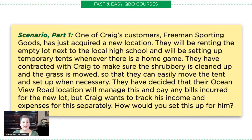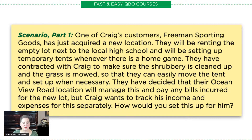Let's take a look at scenario Part 1. One of Craig's customers, Freeman Sporting Goods, has just acquired a new location. They will be renting the empty lot next to the local high school and setting up temporary tents whenever there is a home game. They have contracted with Craig to clean up the shrubbery and mow the grass. They've decided that their Ocean View Road location will manage this and pay any bills incurred for the new lot, but Craig wants to track his income and expenses for this separately. How would you set this up for him?